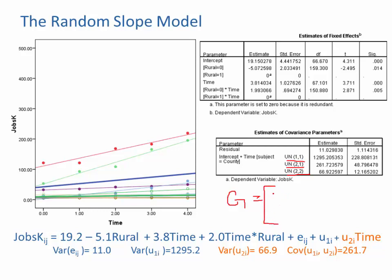So the first term — let's call it tau-zero-squared — is a variance estimate. Here the 1295 is tau-zero-squared, and the 66.9 is tau-one-squared. We can also fit a tau-zero-one, which is the covariance between the slope and the intercept. That's the 261.7, and you can see that's in row 2, column 1.